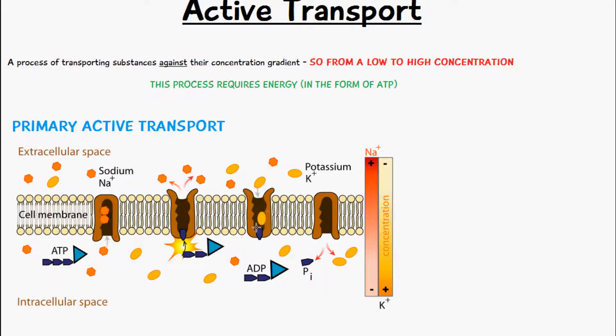Now we have this new shape of the pump, and the sodium ions have been released. This new shape attracts about two potassium ions to come inside, and then the phosphate ion is released. The phosphate ion is released because it caused the shape change, and the pump returns to its original position.